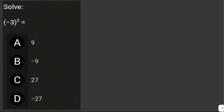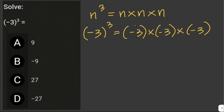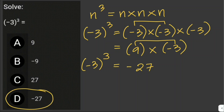Solve negative 3 cubed. To solve this, remember the basic rules of exponents: when a number is raised to a power — in this case cubed — we multiply the number by itself 3 times. So negative 3 cubed equals negative 3 times negative 3 times negative 3. Negative 3 times negative 3 is positive 9, times negative 3 equals negative 27. Therefore, negative 3 cubed equals negative 27, and the answer is letter D.